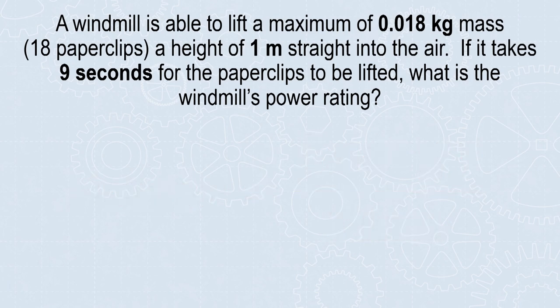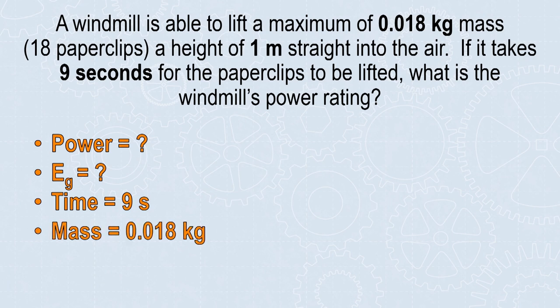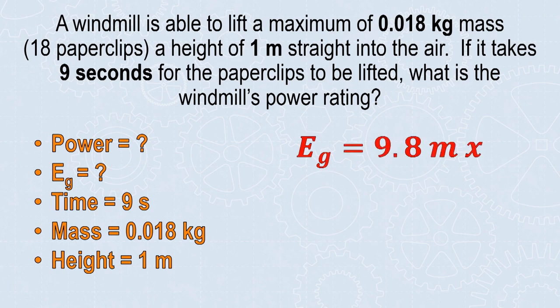We start out by writing out the given information. I know that I'm solving for power, and first I need to solve for gravitational energy. I'm given the time, the mass, and the height. These would all be measured during the activity. Here's our basic gravitational potential energy formula: 9.8, the gravitational force constant of Earth, times the mass of the object (in this case the paper clips), times the height, the distance that the paper clips were displaced.